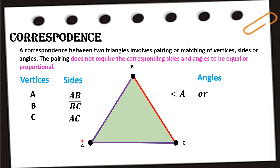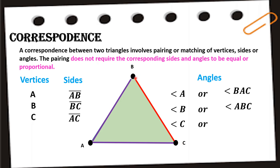Using one letter, we write angle A, angle B, or angle C. Using three letters, the vertex must be in the middle: so angle A is written as BAC, angle B as ABC, and angle C as BCA or ACB — both are equivalent. Those are our vertices, sides, and angles.